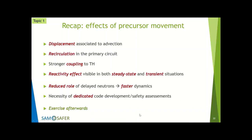To recap: we observe displacement due to advection for delayed emissions from fission, recirculation of delayed neutron precursors in the primary circuit with emission outside the core. As a result: stronger coupling to thermal hydraulics, a reactivity effect visible in steady state and transient, and a reduced role of delayed neutrons — in principle a faster dynamics. Most importantly, this necessitates dedicated code development. You cannot use codes developed for PWR for a molten salt reactor — they're missing these physical phenomena, motivating the research projects SAMOFAR and the current SAMOSAFER.